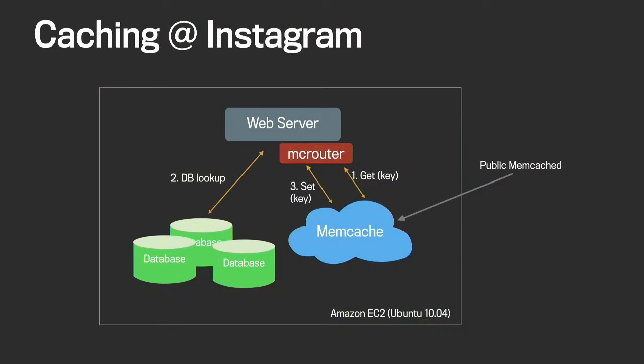Next is Instagram. Instagram uses a very similar demand-filled look-aside cache setup, with one key difference. Last year, when Instagram was still hosted in Amazon EC2, they were using a public memcache instance as opposed to our internal memcache fork. They still adopted MacRouter on this setup and were able to greatly improve cache reliability. This shows you that MacRouter is proving to work outside of Facebook's environment.